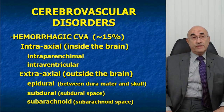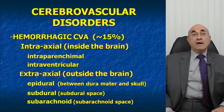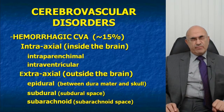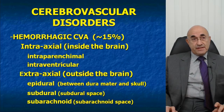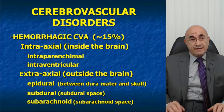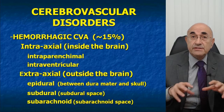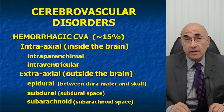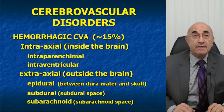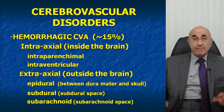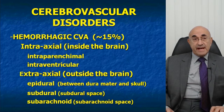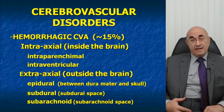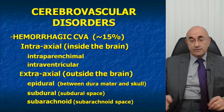Hemorrhagic CVAs, which account for 15%, are divided into intra-axial and extra-axial types. Intra-axial CVAs may occur inside the brain tissue — called intra-parenchymal — or inside the ventricle, called intraventricular, or both. Extra-axial CVAs, which occur outside the brain, can be epidural, subdural, or subarachnoid.